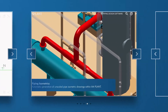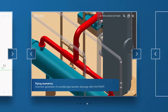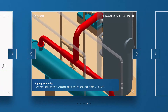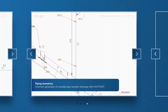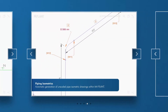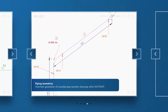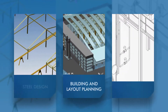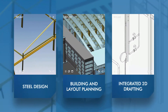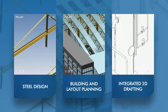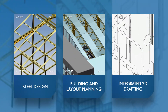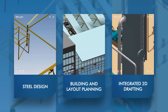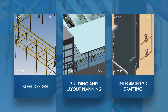M4Plant automatically generates fully-dimensioned, production-ready piping isometric drawings directly from the 3D pipework model. Additional modules for steelwork design, building design, and 2D construction drawing production can be used to complete your design.